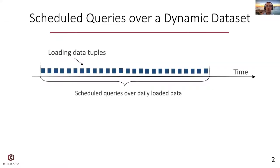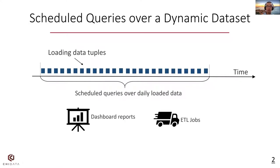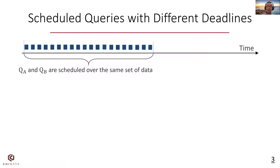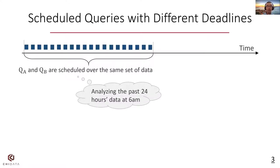Scheduled queries over a stream of tuples are prevalent in today's database applications, such as maintaining dashboard reports for daily loaded data and regular ETL jobs. In many cases, scheduled queries are querying the same set of data, like analyzing the past 24 hours data at 6 a.m., but they have different deadlines — like QA needs to generate the report at 7 a.m., but QB's deadline is at a later time.